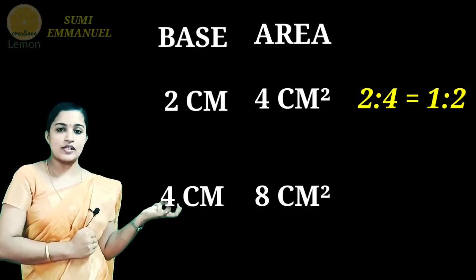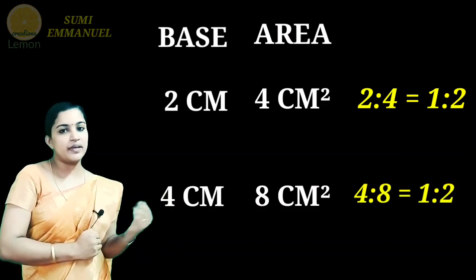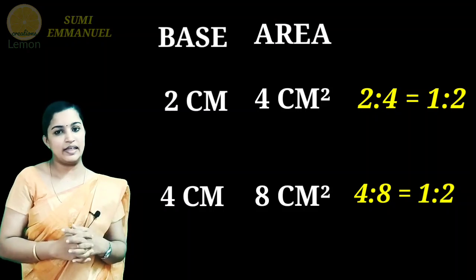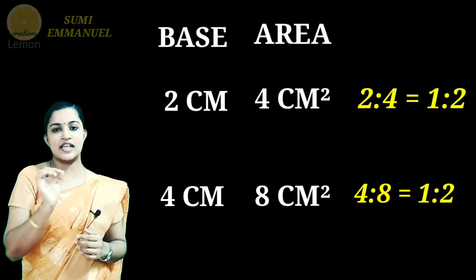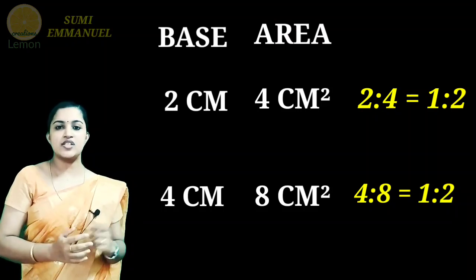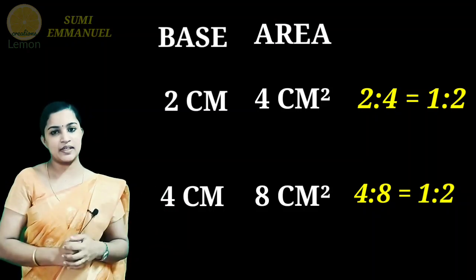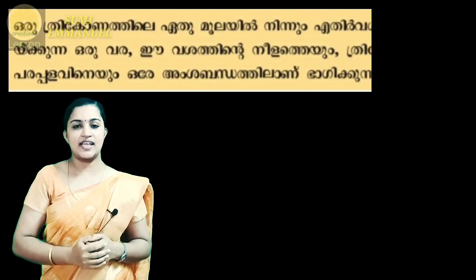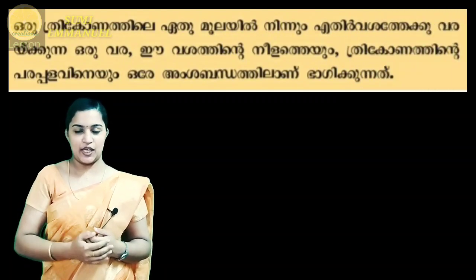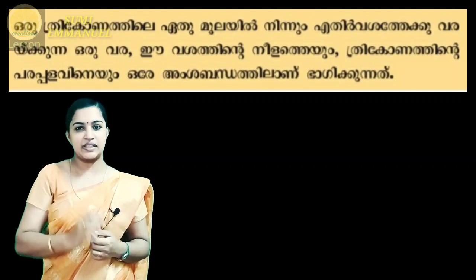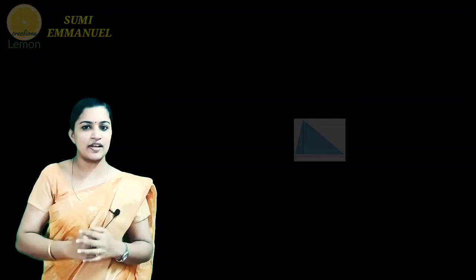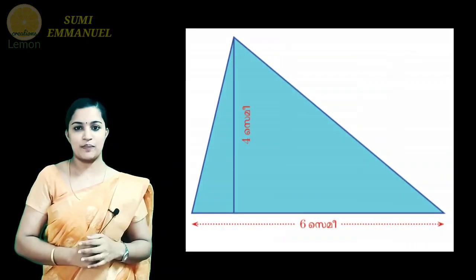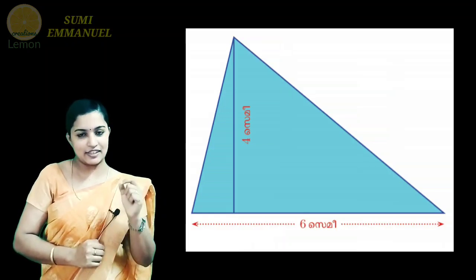That is 4 cm squared and 8 cm squared — the ratio is 1 to 2. The total is 12 cm squared. We can see that the triangle ratio is 1 to 2. This triangle is within a triangle. It is 6 centimeters and 4 centimeters. We want to see this triangle in a 2 to 3 ratio.